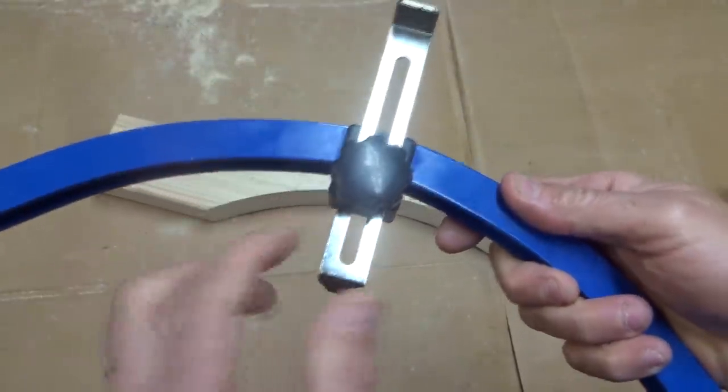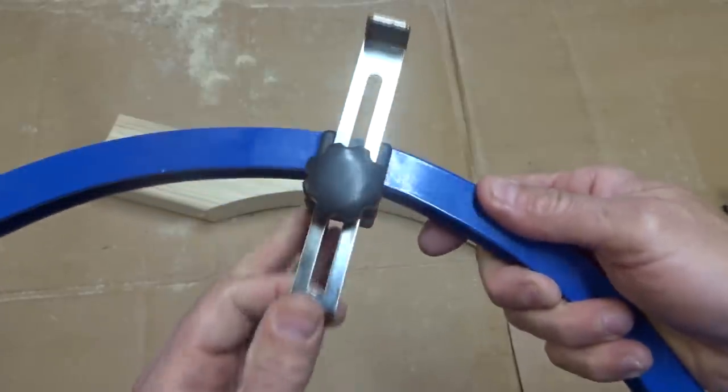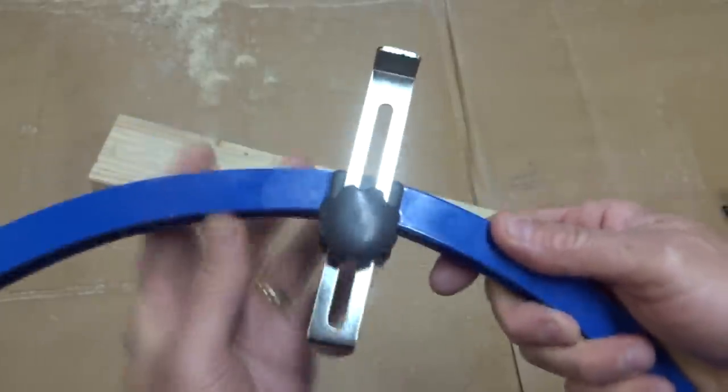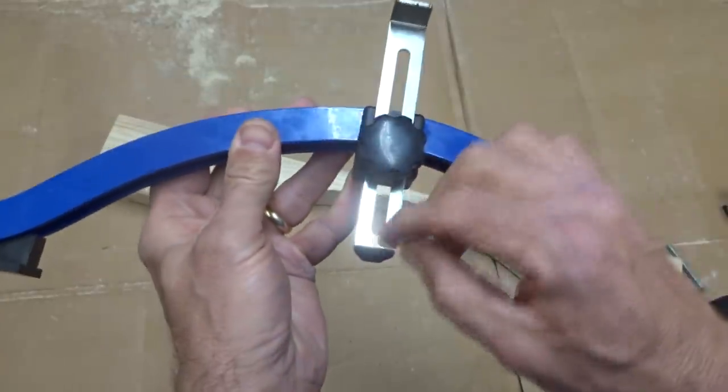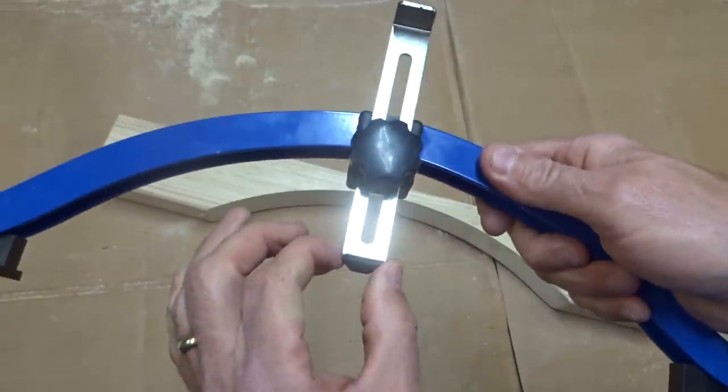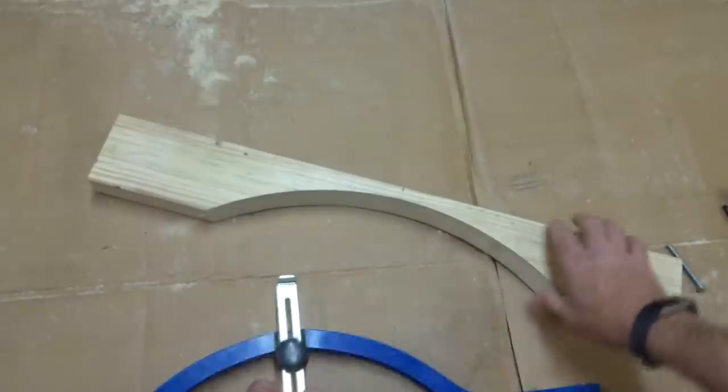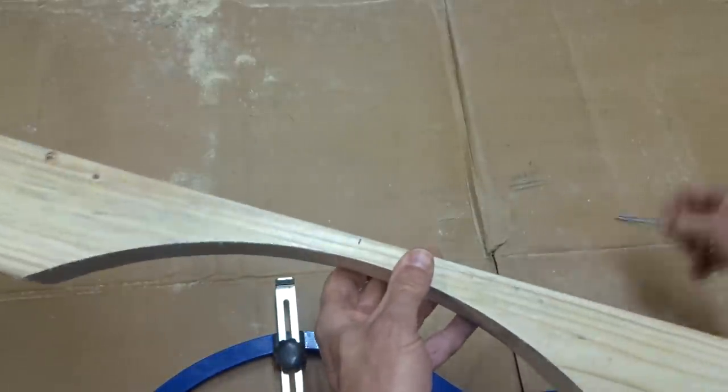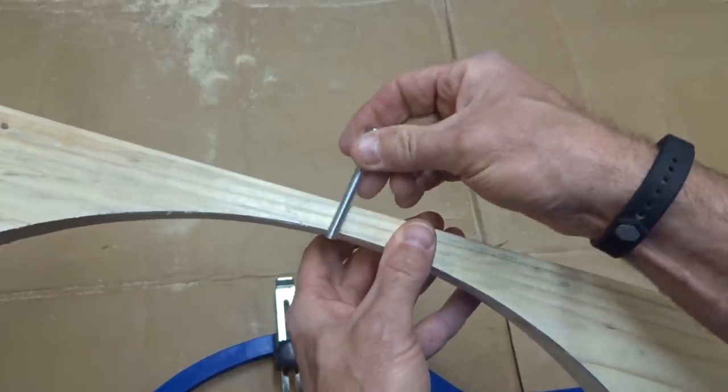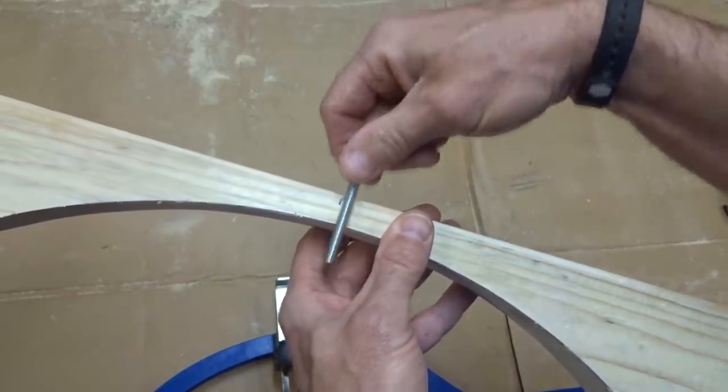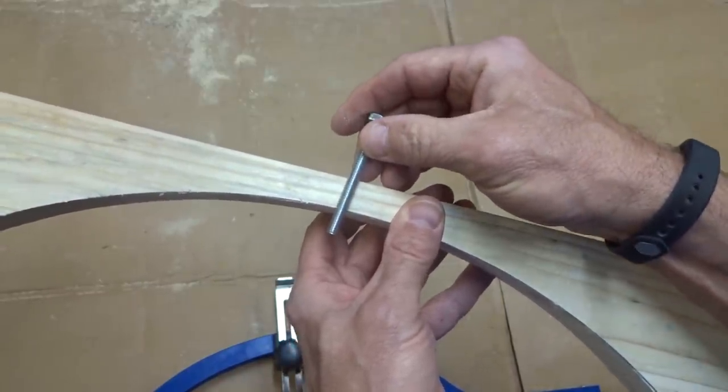Now on my dishing tool, it's got this indicator gauge that slides up and down and can lock into place. And then that measures the rim to hub alignment on each side of the wheel. I need something like that on mine. So what I'm going to do is I'm going to drill a hole down through there and I'm going to put a bolt and I can screw this bolt in or out and that will be my indicator gauge.